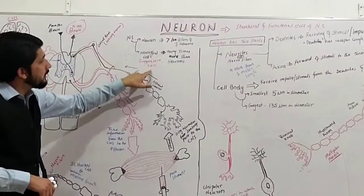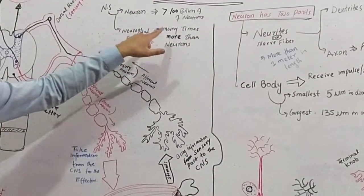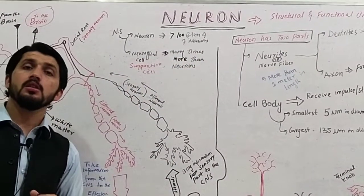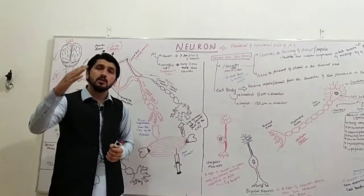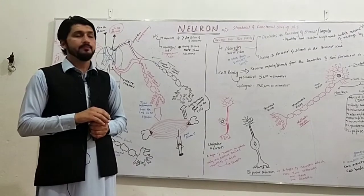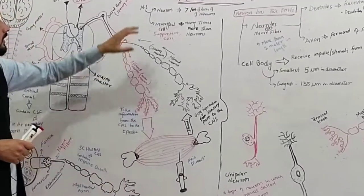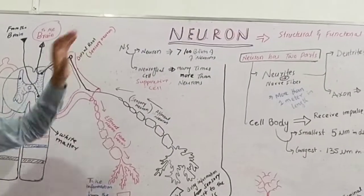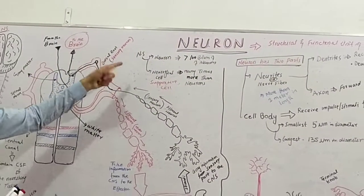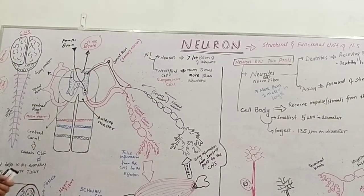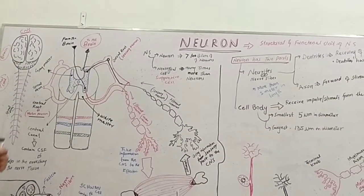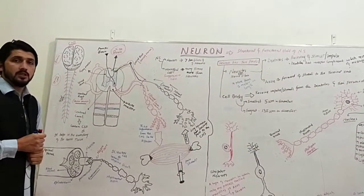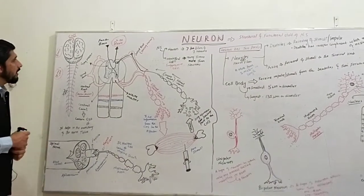Neuroglial cells are many times more numerous than neurons. Together, neurons and neuroglial cells create the nervous system. In a previous lecture, I had discussed the classification of the central nervous system and the peripheral nervous system.